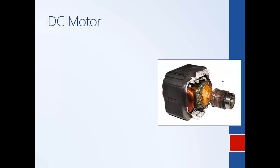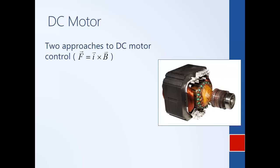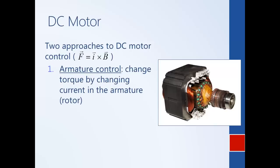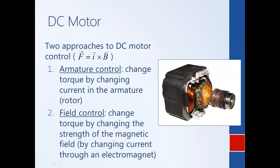In general, there are two approaches to control a DC motor. We're trying to control the torque or force acting on the rotor. From Lorentz's law, the strength of the force is affected by two things: the amount of current and the strength of the magnetic field. These are our two options. Controlling the motor by affecting current is called armature control — we change the torque by changing the current in the armature. The alternative, affecting the magnetic field, is called field control.